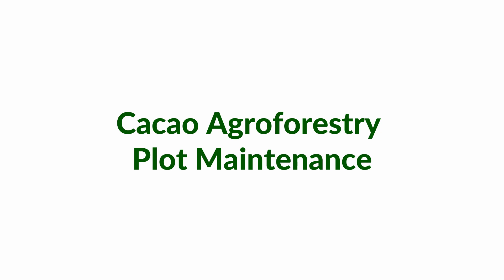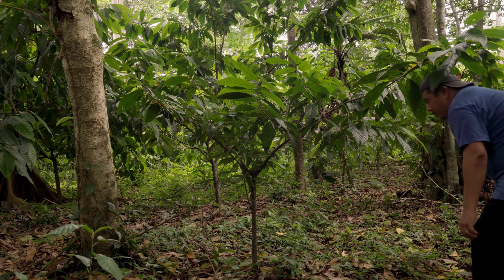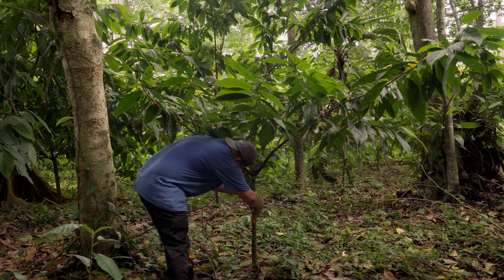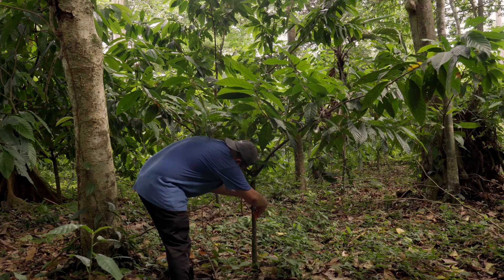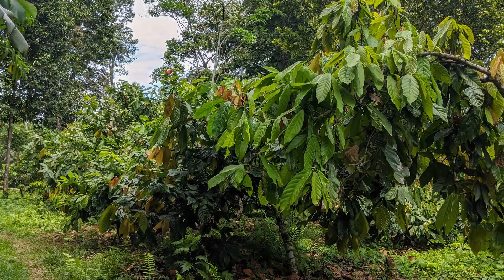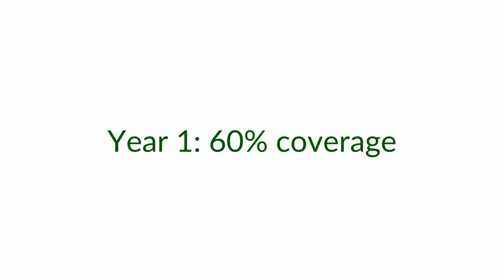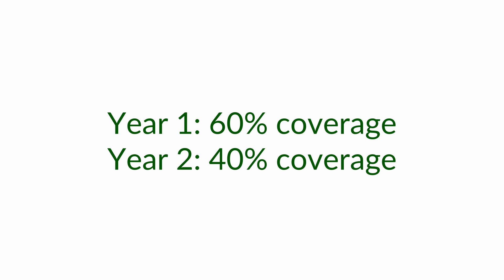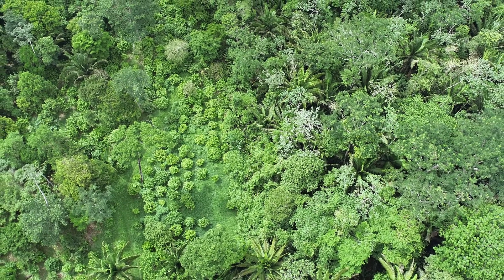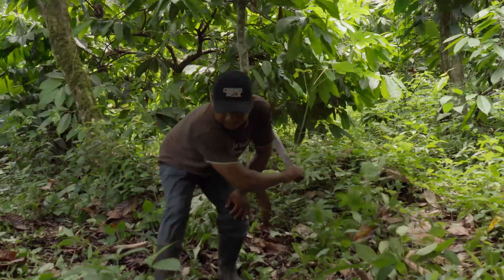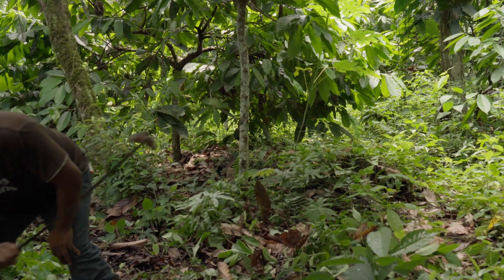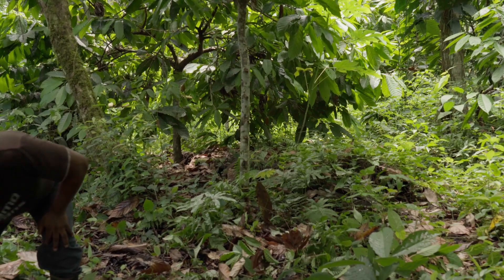Kakao agroforestry plot maintenance: after the plot is established comes a two-year period of proper maintenance. The farmer will need to keep the plot clean, preferably three times per year. The farmer will also need a shade management strategy looking at 60 percent shade in the first year, 40 percent shade in the second year, and 30 percent shade in the third year. Weed control in the plot should be done preferably every three months, creating a continuous system for the farmer.